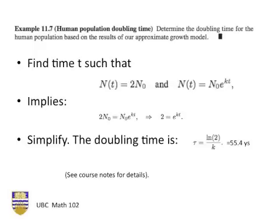In a second example, we're asked to determine the doubling time of the human population. That means we want to find a time t at which n of t is twice its initial value, and also it's equal to n0 e to the kt, the solution of the differential equation. This implies that 2n0 has to equal n0 e to the kt, and this simplifies to 2 equals e to the kt.